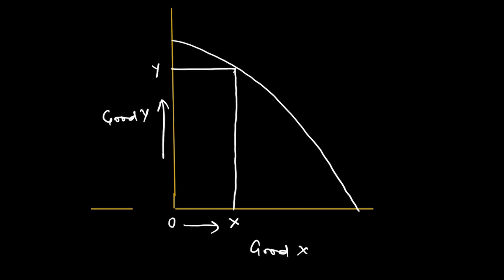Now, if I want to increase the quantity of good X from OX to X1, then I will have to reduce the quantity of Y from Y to Y1. This is a curve which is known as PPC curve. We will study this in my next video.